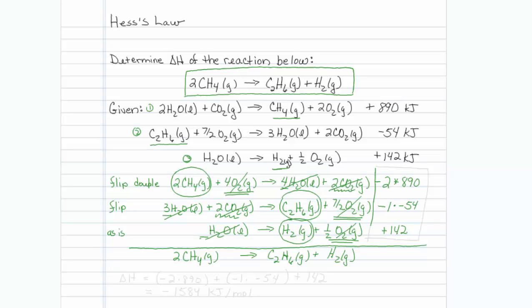So now all I have to do is crank through the math and sum up final values. So I'm going to take, as my delta H, it's going to equal a minus two times 890. That was my first reaction that I doubled and flipped, plus a minus one times a minus 54. That was my second reaction that I just flipped, plus 142, which is a reaction I left alone. I put that all into my calculator, and it comes out minus 1584 kilojoules per mole for that reaction as written.